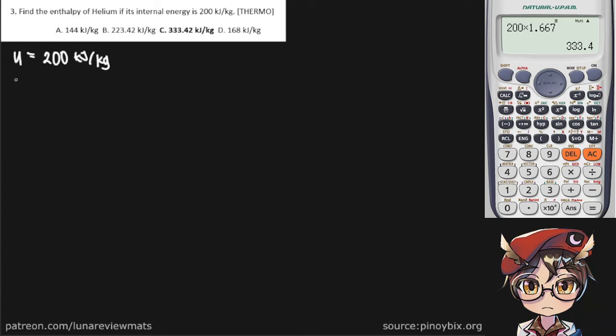For this question we're going to need the specific heat ratio k, which is given by the specific heat at constant pressure divided by the specific heat at constant volume.